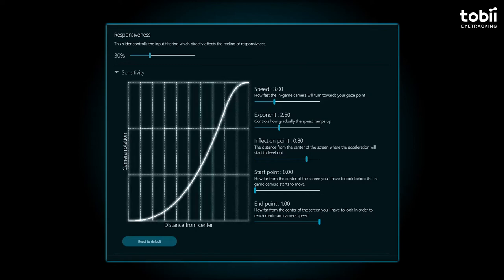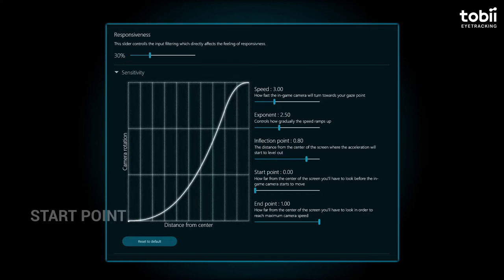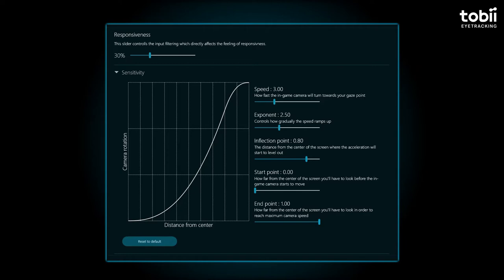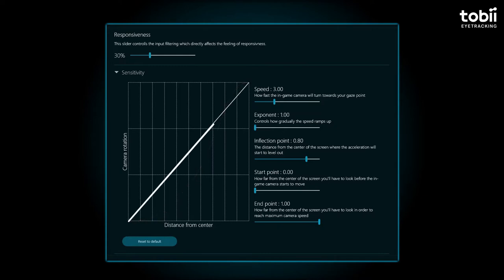As you can see here, we have a graph visualizing this. The single line graph shows all these settings in action, with the distance from the center being the starting point and the shape of the line showing where Eye Tracking starts. A rolling hill-like formation will mean a slower, gradual camera rotation, as opposed to a straight diagonal line which will mean a fast, quick transition of camera rotation. We will now dive into these settings a little deeper.